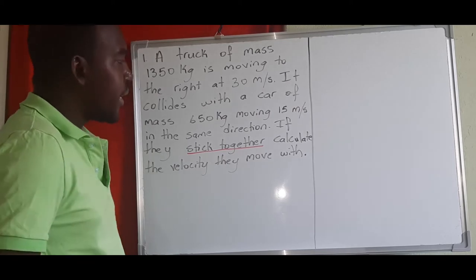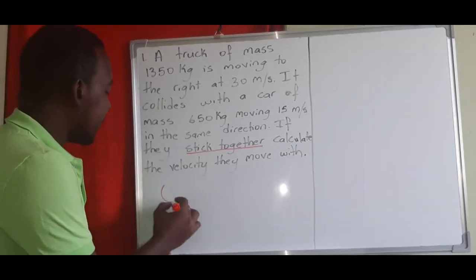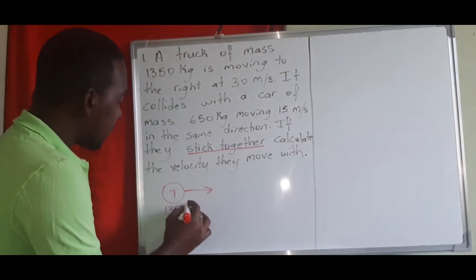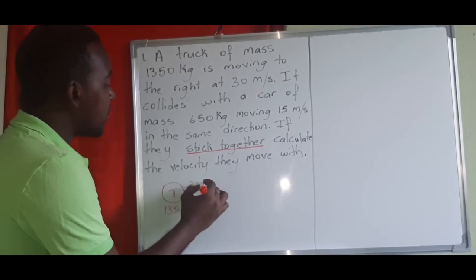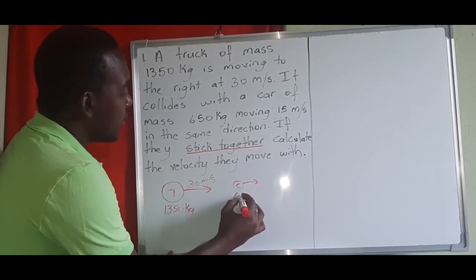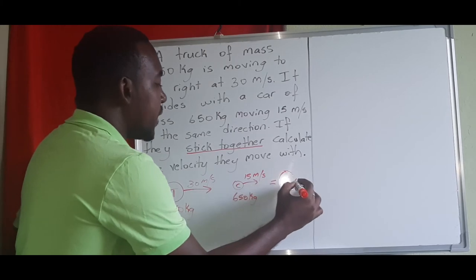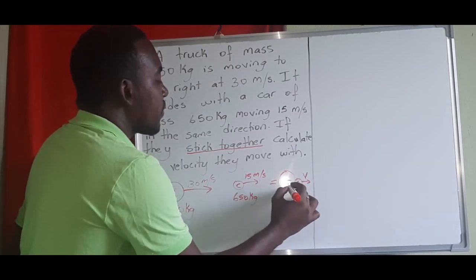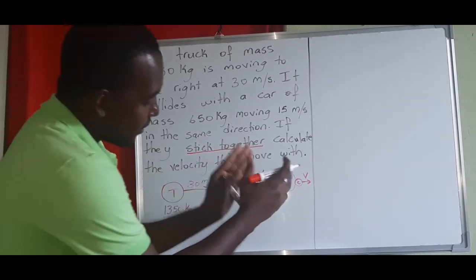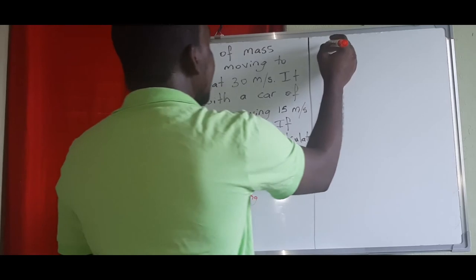I love to sketch a diagram based on the question to make life easy. So we have a truck of mass 1,550 kilograms moving to the right at 30 meters per second, and a smaller car of mass 650 kilograms moving at 15 meters per second in the same direction. After the collision, the truck and car move off together with velocity v. Both move in the same direction, and we need to find that velocity.